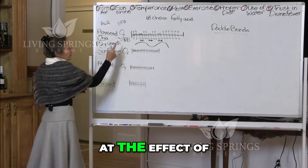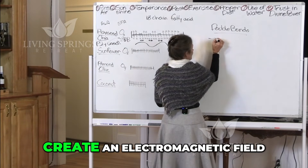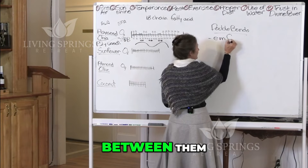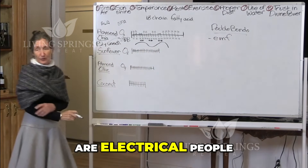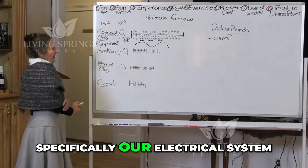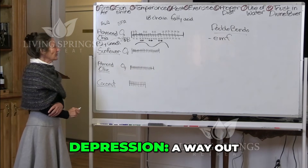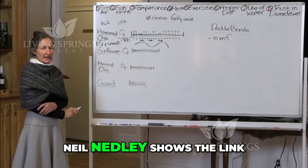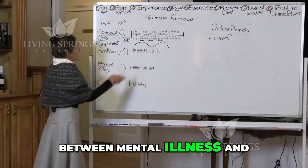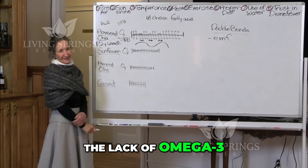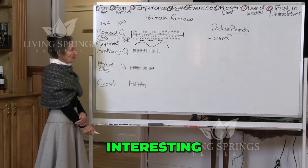Let's have a look at the effect of these double bonds on the body. These double bonds create an electromagnetic field between them. This is important for us because we are electrical people — specifically, our electrical system is our nervous system, our brain. In his book 'Depression: A Way Out,' Dr. Neil Nedley shows the link between mental illness and a lack of omega-3, because the highest concentration of nerve cells is what our brain is.